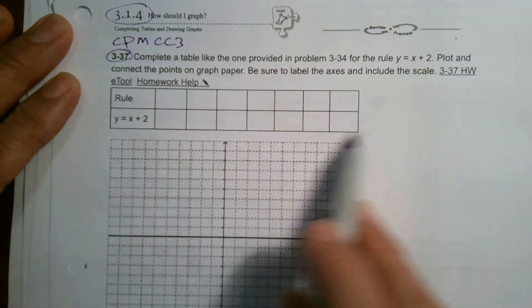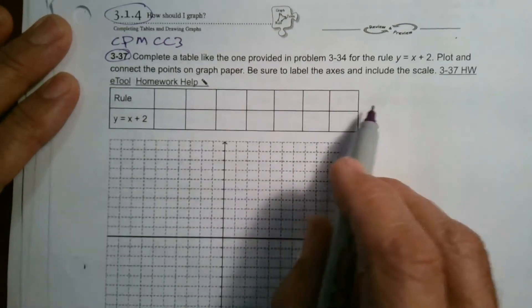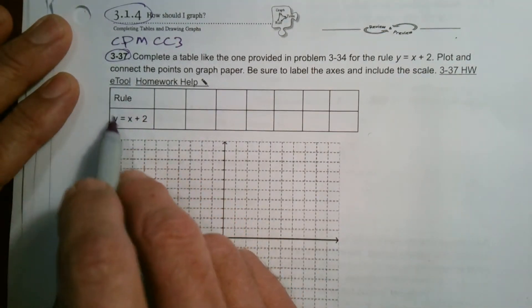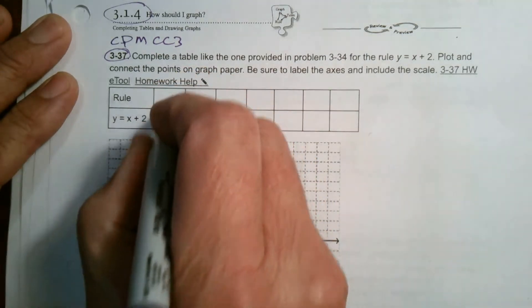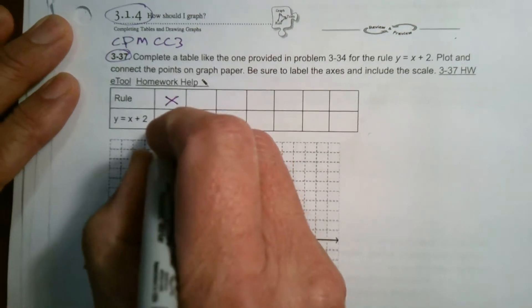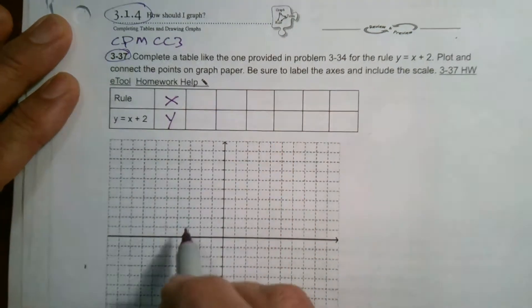So I've got a table already sitting here that's set up. We'll use this table. And our rule is going to be y equals x plus 2. So remember in your table, you have the x values and then the corresponding y values.